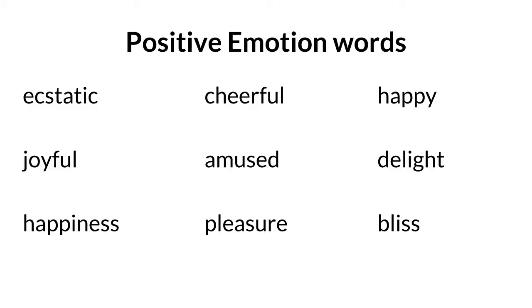The full lexicon contains hundreds of words, so what you see here is just a small sample. However, you'll probably notice that some words seem to express more positive emotion than others. For example, words like ecstatic or bliss express strong positive emotions, whereas words like pleasure are still positive but perhaps less so. So in our analysis, we'd want to assign different weights to these words accordingly, so very positive words are weighted more heavily than slightly positive words.